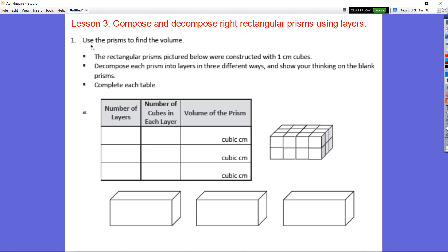Number one asks us to use the prisms to find the volume. The rectangular prisms pictured below are constructed of one centimeter cubed. Decompose each prism into layers in three different ways and show your thinking on the blank prisms. We're also going to be asked to complete the table. The first thing that we can do here, let's say, we can have two layers.